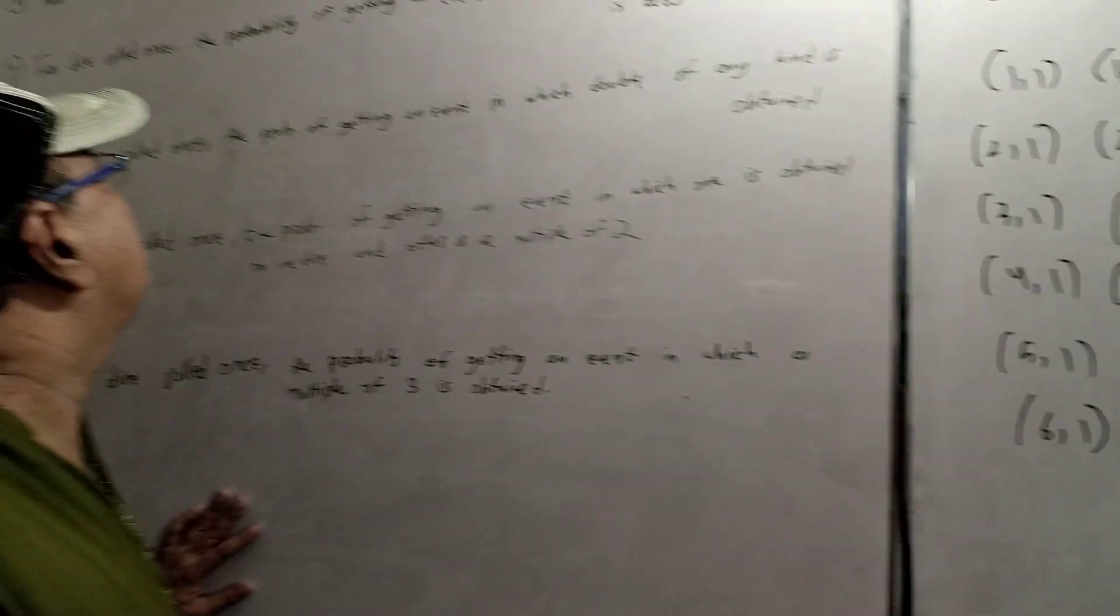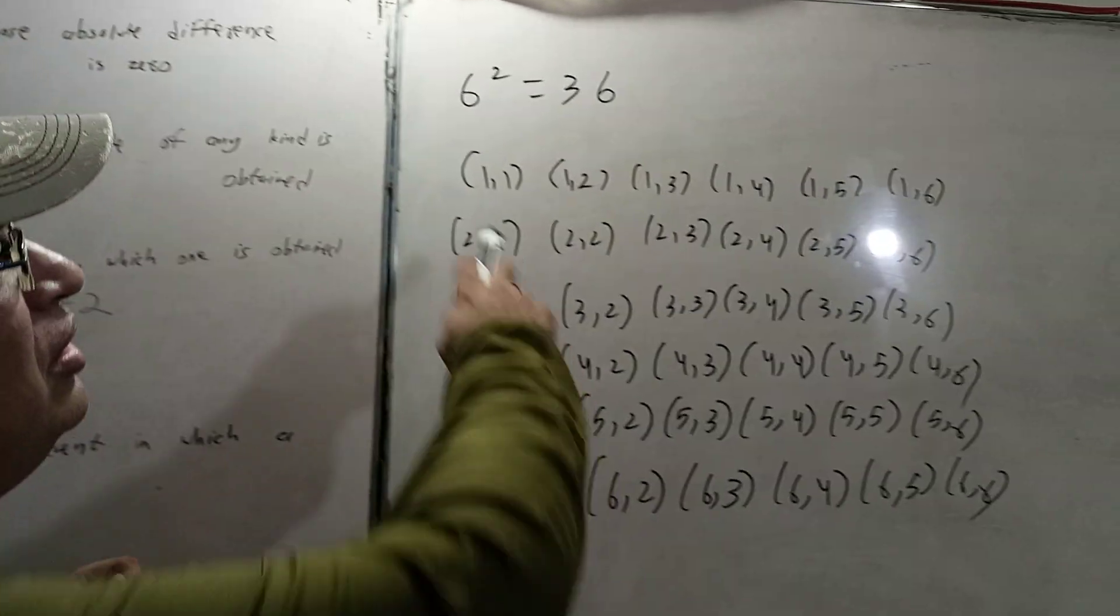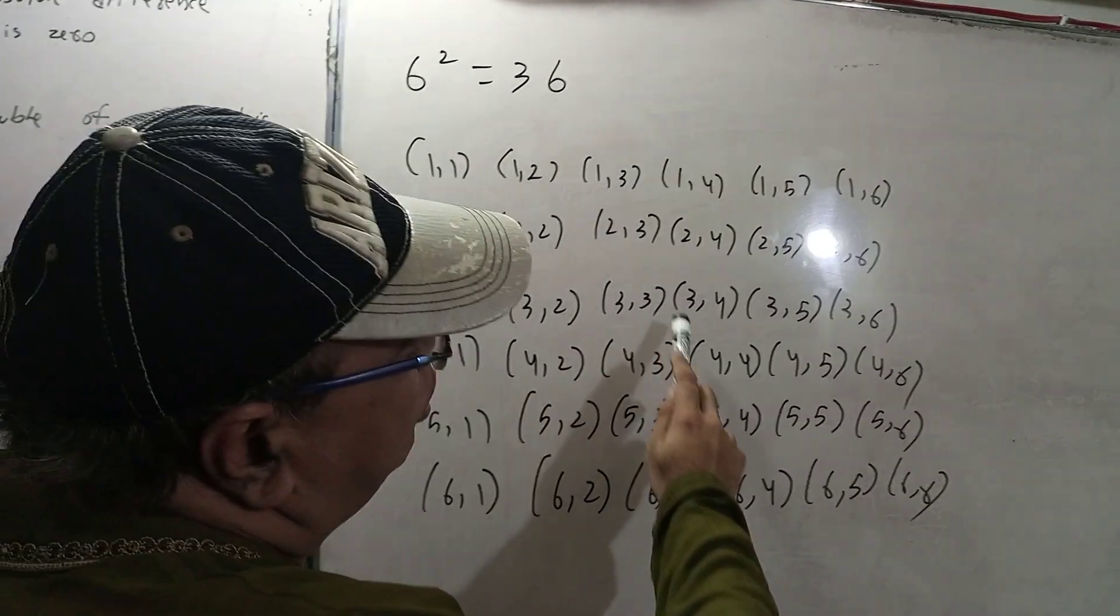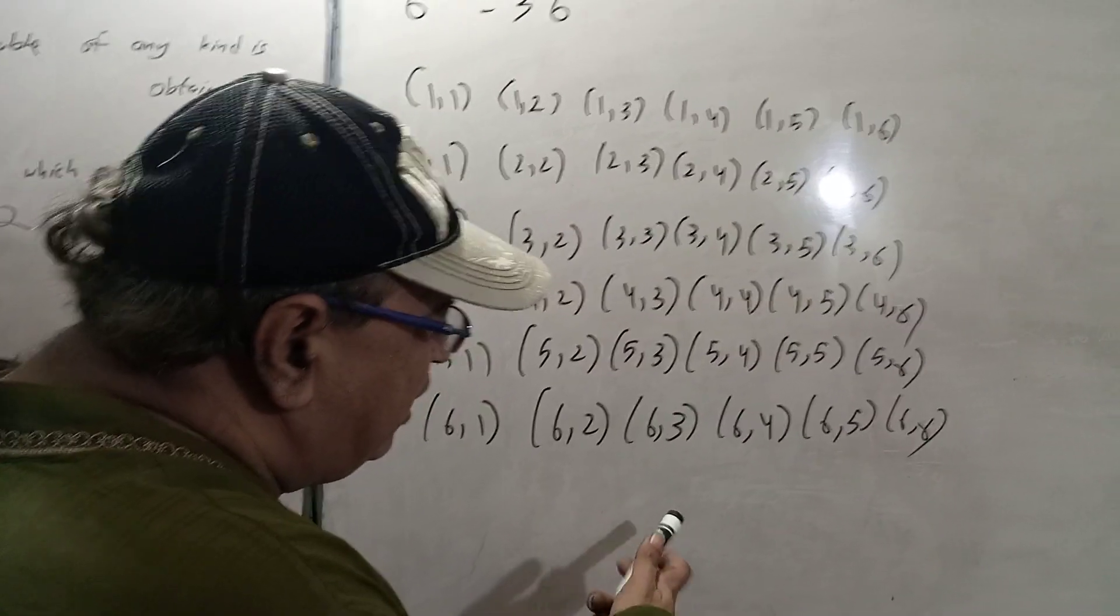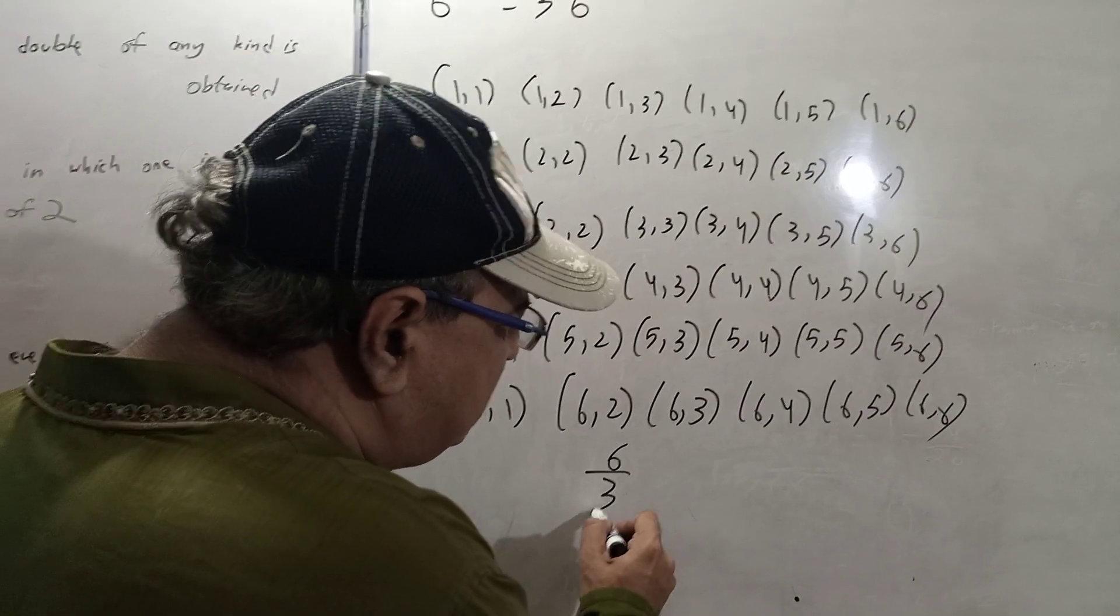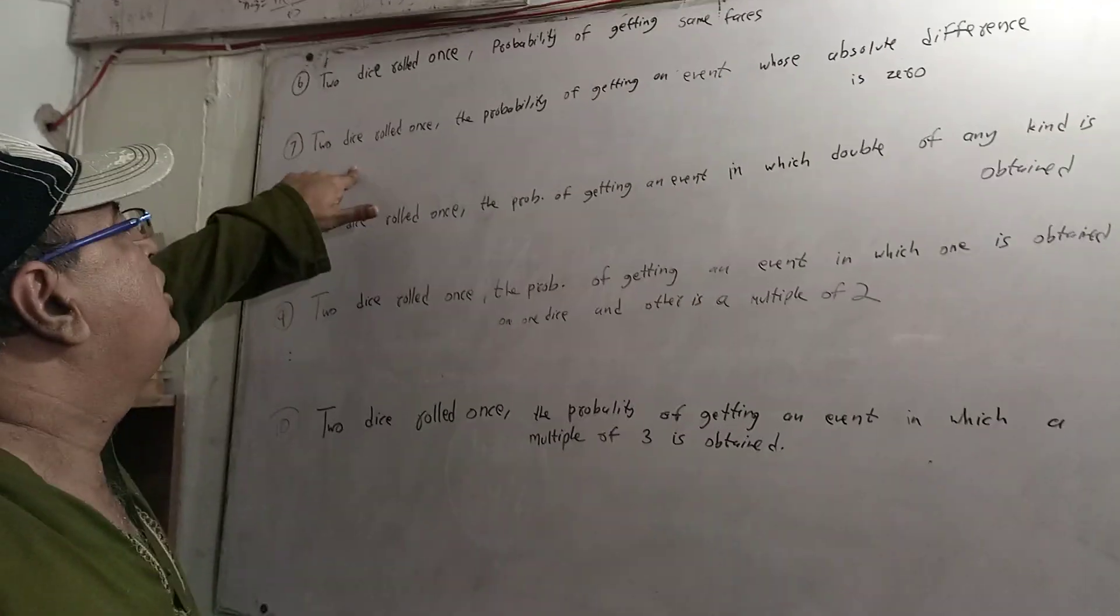Now they are asking for the probability of getting same faces. Same faces means outcomes like (1,1), (2,2), (3,3), (4,4), (5,5), (6,6). How much is the answer? Counting these favorable outcomes: 1, 2, 3, 4, 5, 6. Six outcomes total.